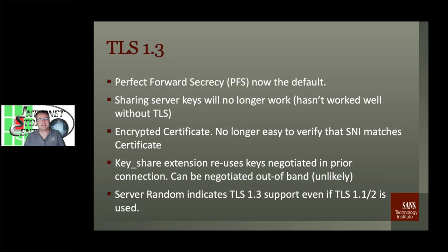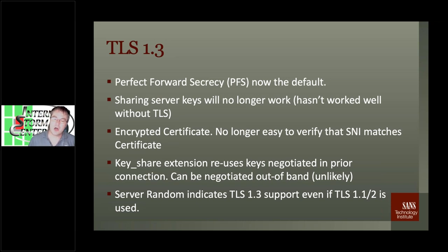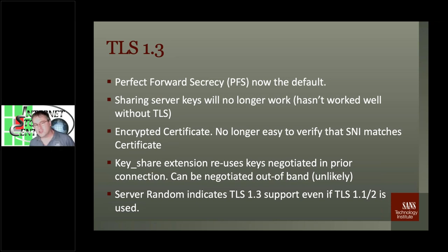Another interesting part is that you can reuse some of those keys negotiated in a prior connection. That makes it more difficult if you have man-in-the-middle boxes — for example, mobile device users who established a connection outside, now connecting to your network setting up a new connection. That can get in the way. Also, the Server Random that you get indicates if it supports TLS 1.3 via special bits. If someone is playing man-in-the-middle trying to downgrade to TLS 1.1 or 1.2, the client can drop the connection, so your middle boxes need to come up with their own new Server Random.